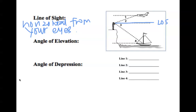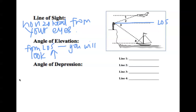Angle of elevation. This is from your line of sight — you will look up. For example, the line of sight from the person looking up will be angle 2. So angle 2, or line 2, is going to be the angle of elevation.